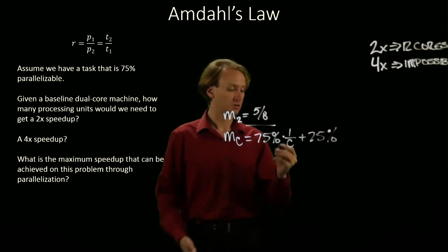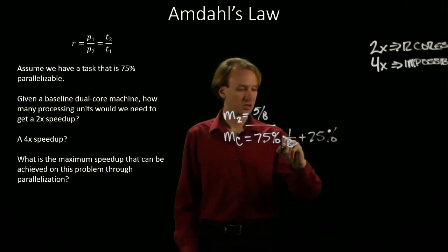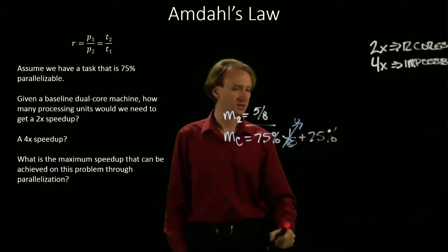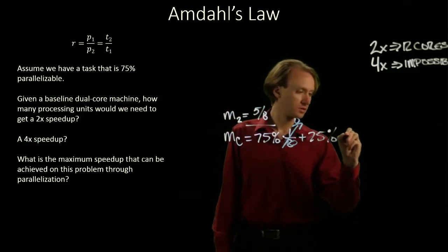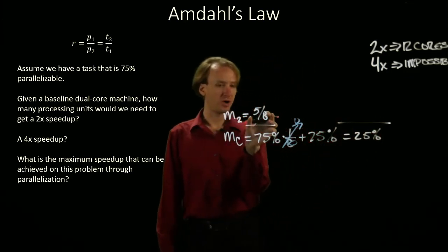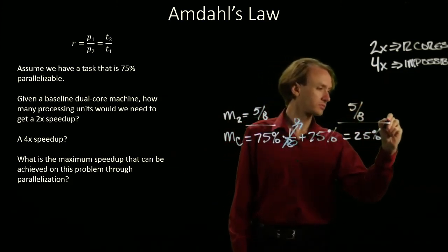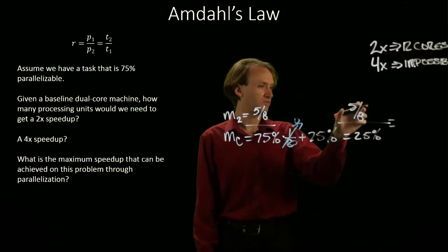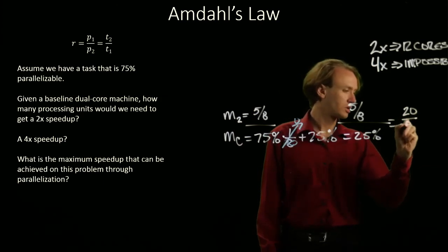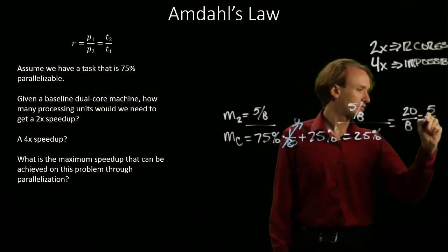We're going to see what the results are. So, if I substitute infinity in here for the number of cores, then this term will go to 0. And I'll just be left with this 25%. And the top part of my relative performance equation is still the 5 eighths. So, when I've got 5 eighths divided by 1 fourth, I can reduce this to 20 over 8 or 5 halves.